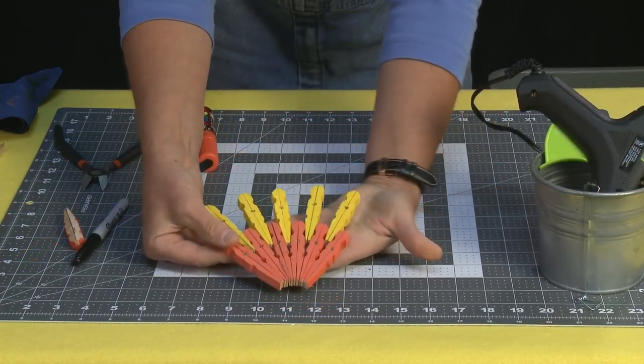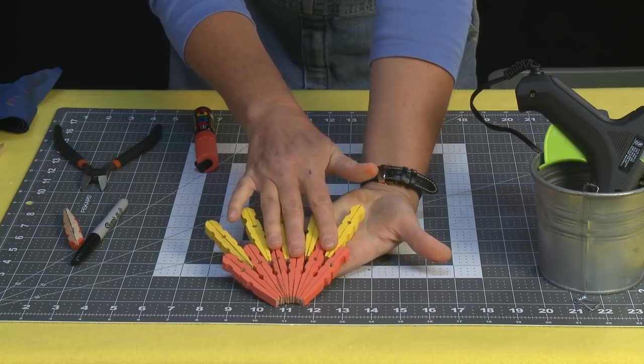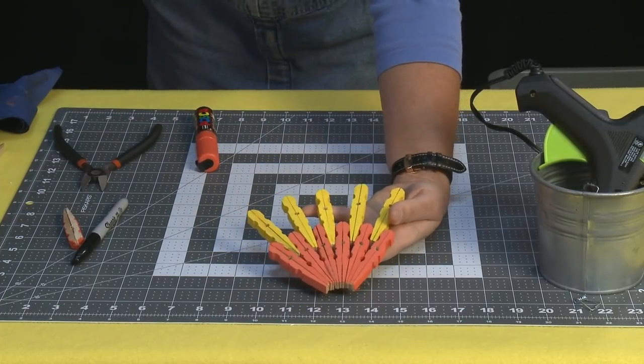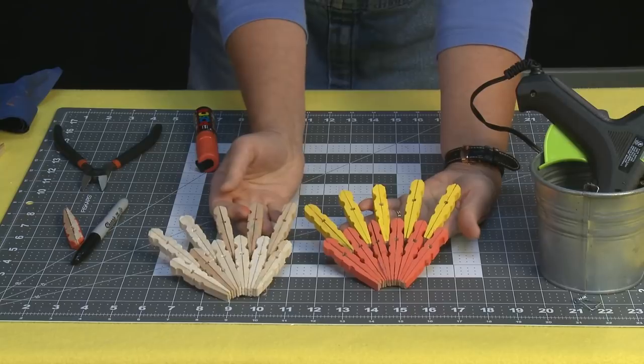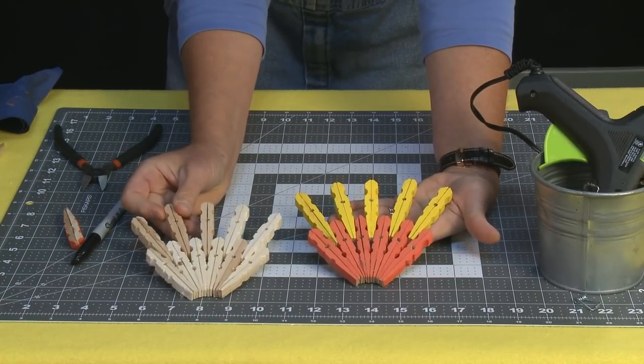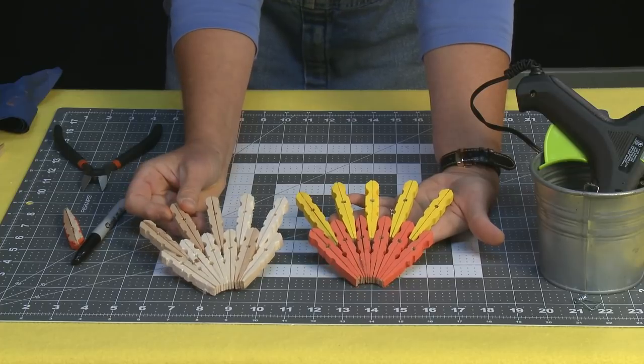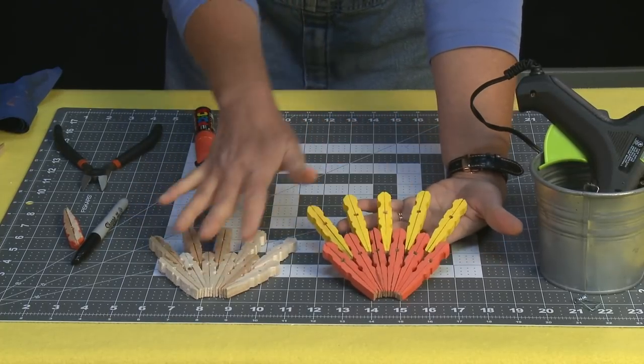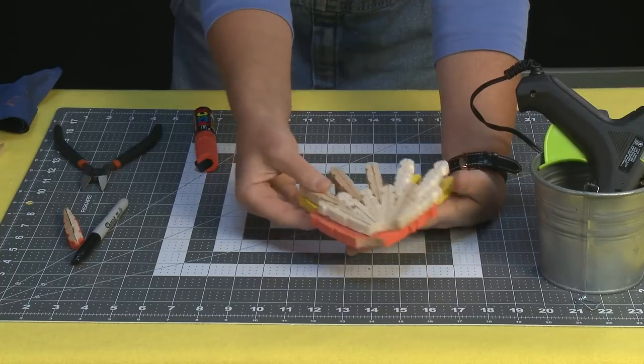There you go. So you're going to repeat this so that you end up with two. Now I'm going to do one side natural and one side that is colored. So I've got my all natural side put together and then I have my colored side. So you need two sets. One for each side. Now we're going to make the middle part.